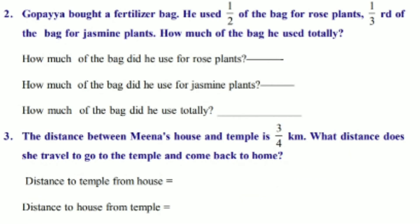Second one: Gopaya bought a fertilizer bag. He used 1/2 of the bag for rose plants, 1/3 of the bag for jasmine plants. How much of the bag he used totally?